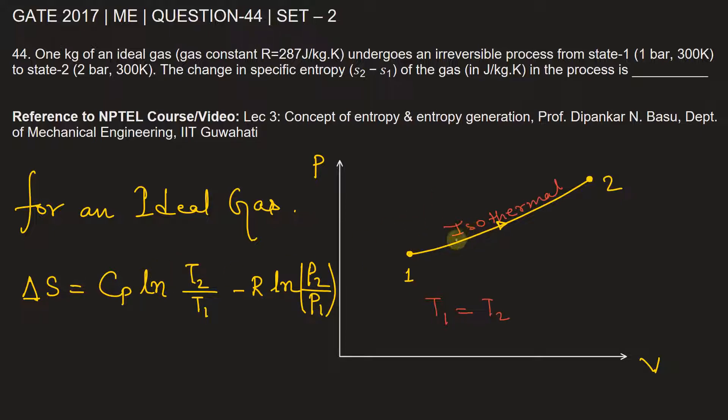Since the isothermal process is from 1 to 2, S2 minus S1 will equal... T2 equals T1 because it's isothermal process, so ln 1 value is 0. This term will be equal to 0. Now it will become minus R ln P2 by P1.